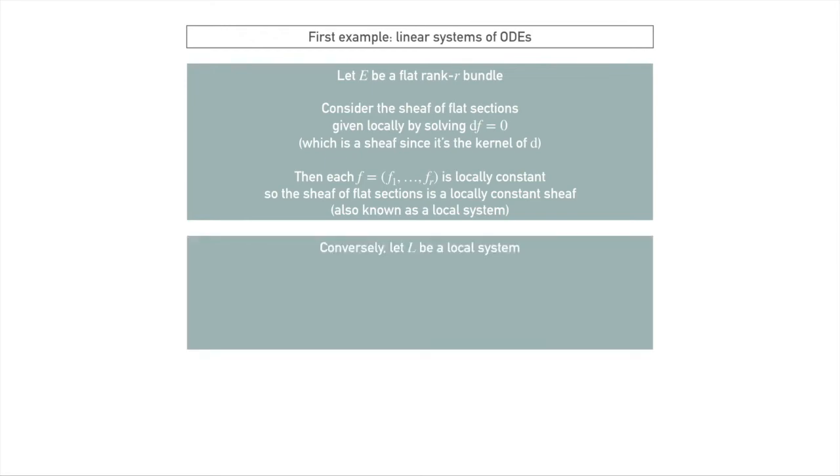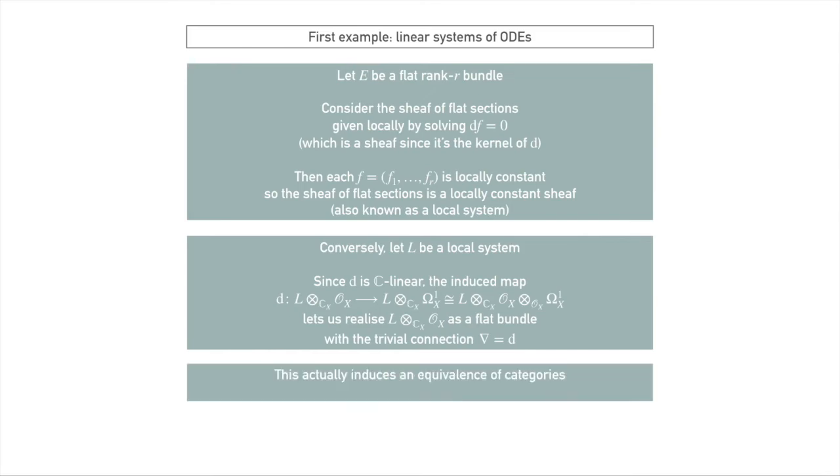And this is also known as a local system. If we now take a local system, some locally constant sheaf, then since the differential is a C-linear map, we get an induced map of some tensor products here. And this actually lets us realize our local system, when we tensor it with holomorphic functions, as a flat bundle with a trivial connection. So we have a way of going between flat bundles and local systems. And luckily, and wonderfully, this actually induces an equivalence of categories. And it's a special case of the so-called Riemann-Hilbert correspondence.